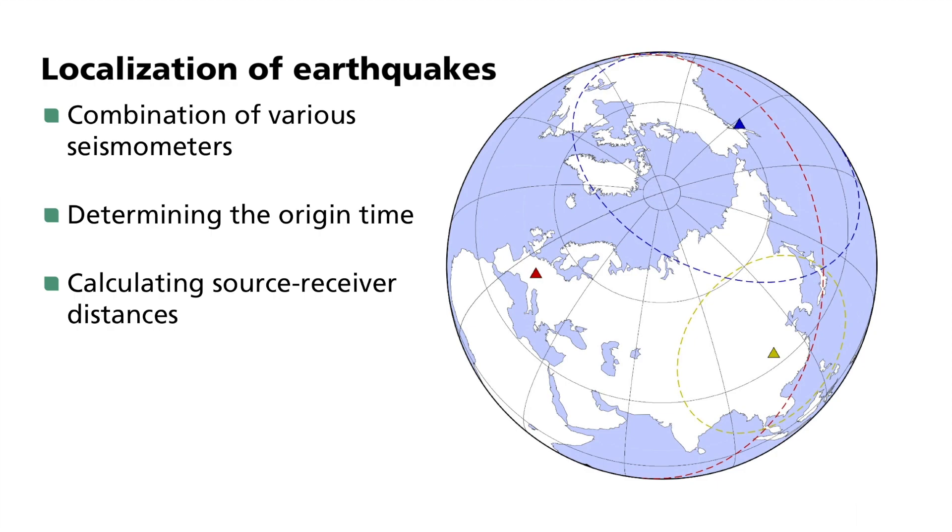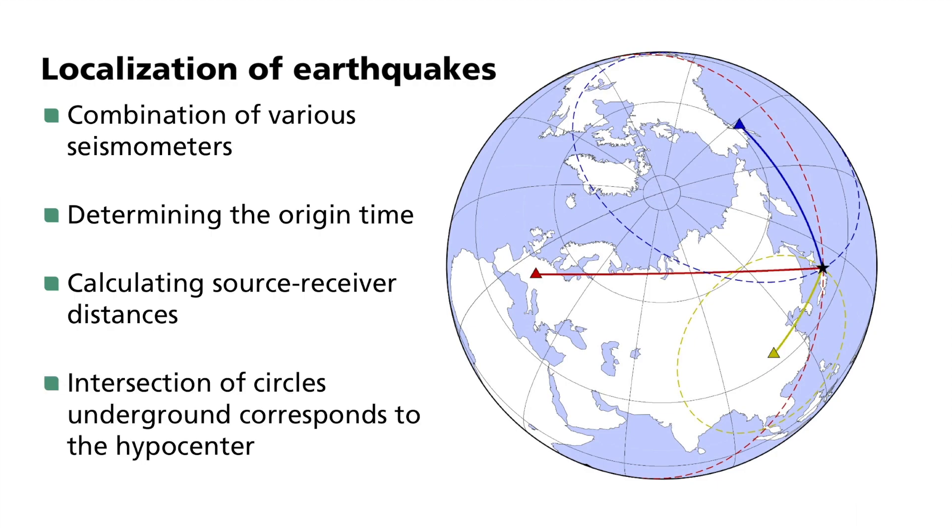By superimposing the individual distances, the underground source of an earthquake, the hypocenter, is then localized. The point directly vertically above this source on the earth's surface is called the epicenter. The hypocenter of the Tohoku quake was at a depth of 29 kilometers, around 100 kilometers off the Japanese coast.